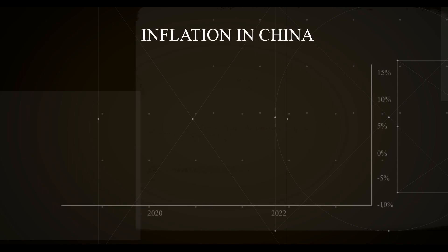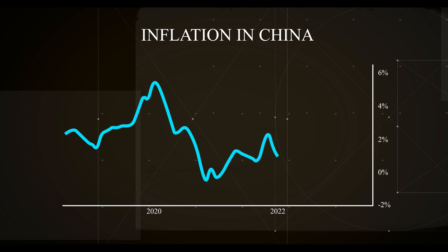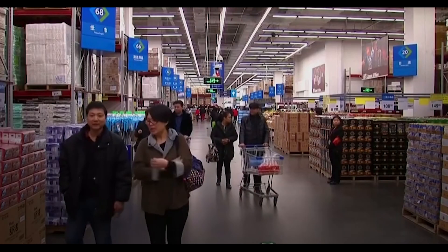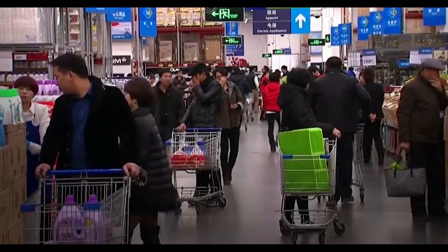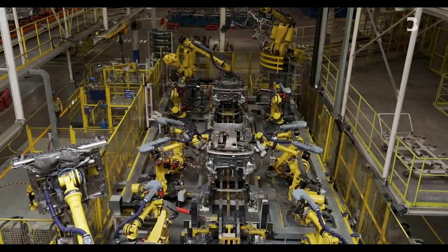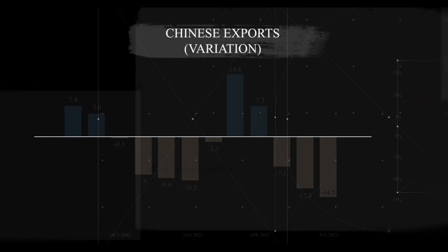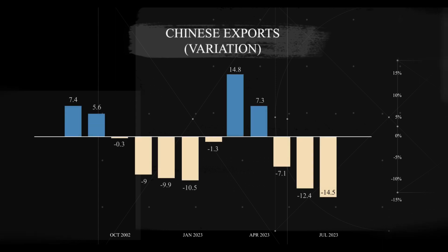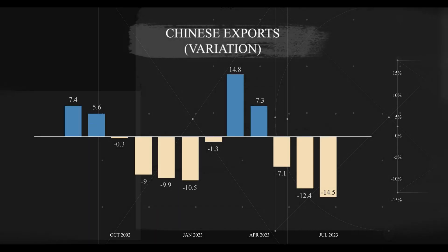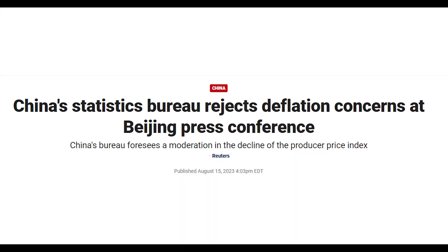China's producer and consumer price indexes both reflected a decline in July 2023 — 4.4 percent and 0.3 percent respectively compared to 2022 — raising the possibility that the country is facing a deflationary episode if it fails to reverse this trend. China, the world's factory, is experiencing a sharp drop in demand internationally, with a 14.5 percent decrease in exports as of July. Ironically, this is due to inflation elsewhere in the world, which has led to interest rate hikes, reduced credit access, and less disposable income. Meanwhile, domestically, there is weak internal demand.